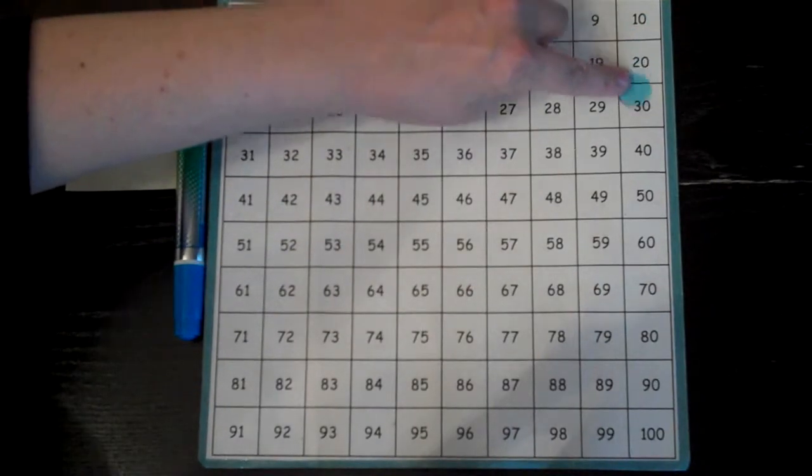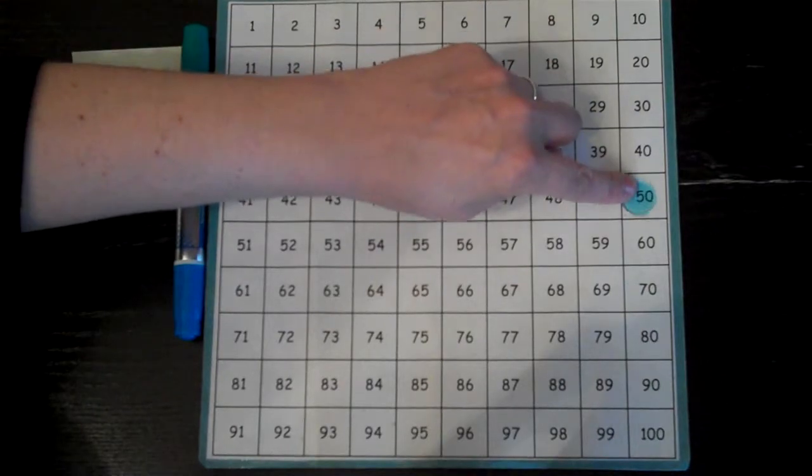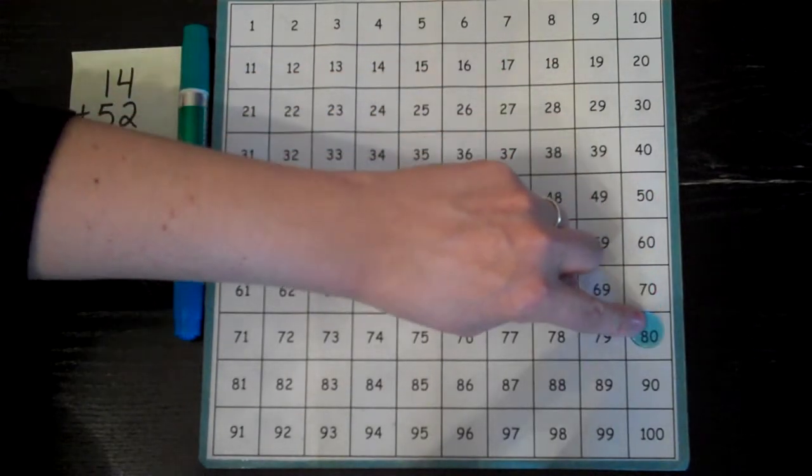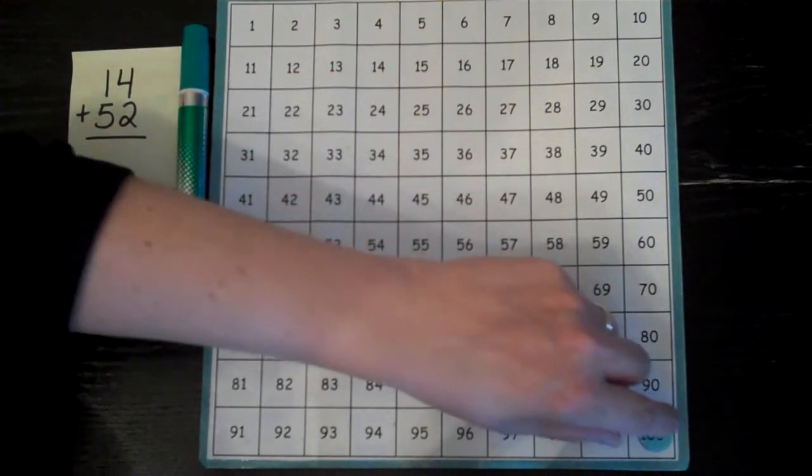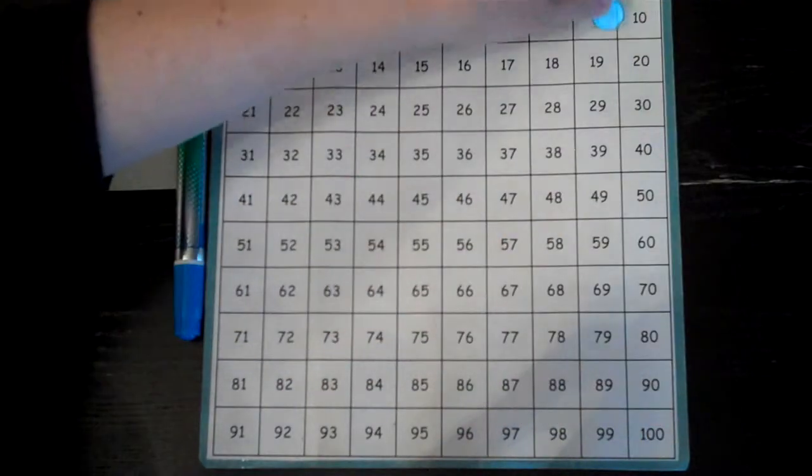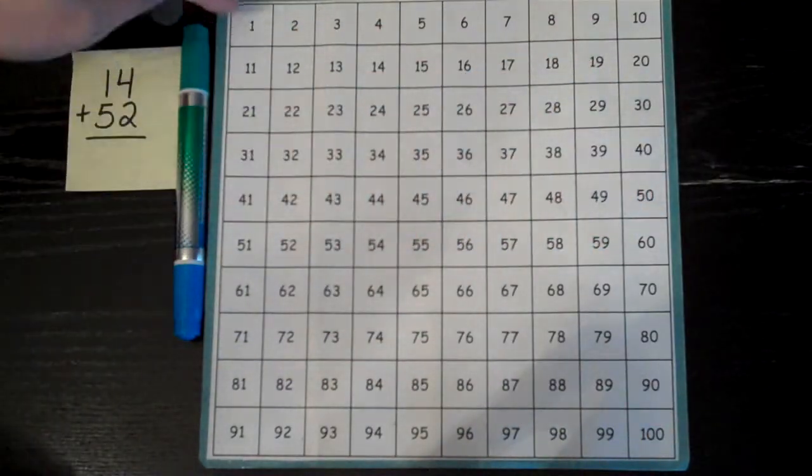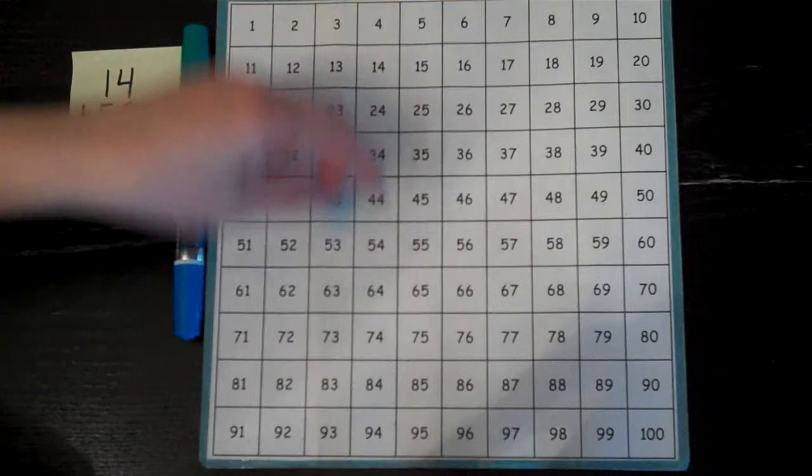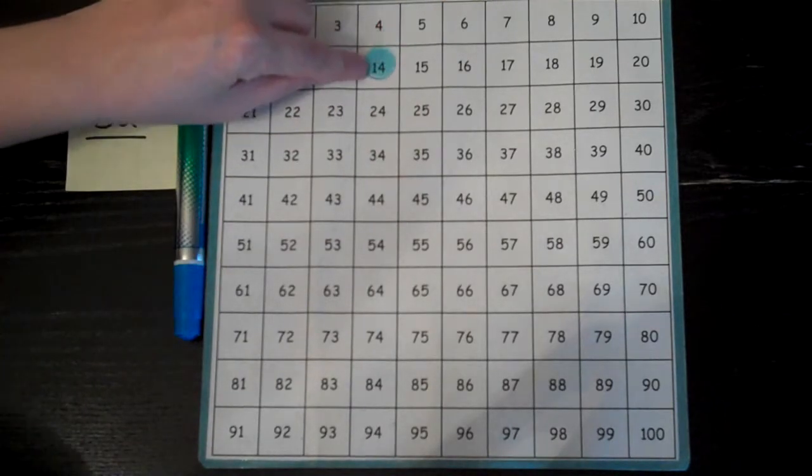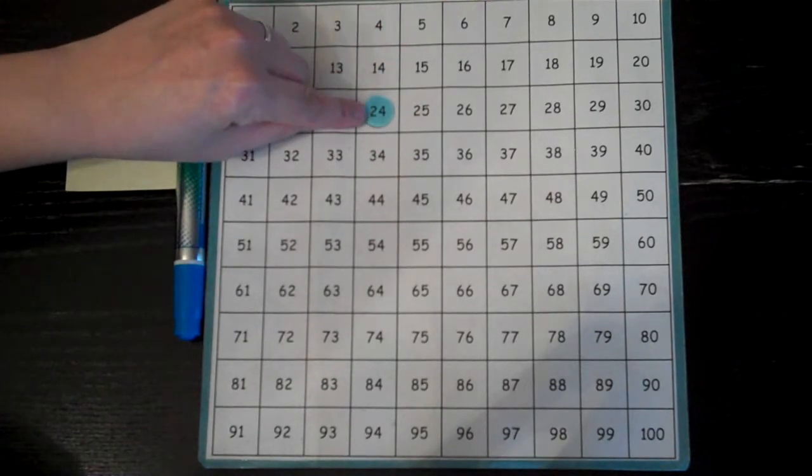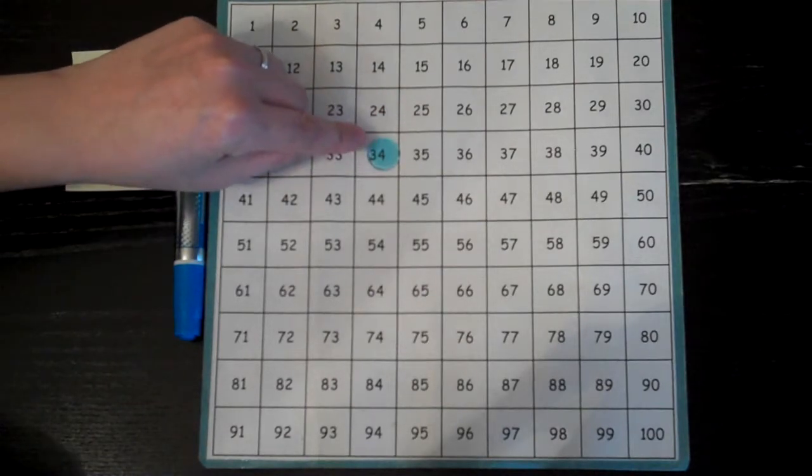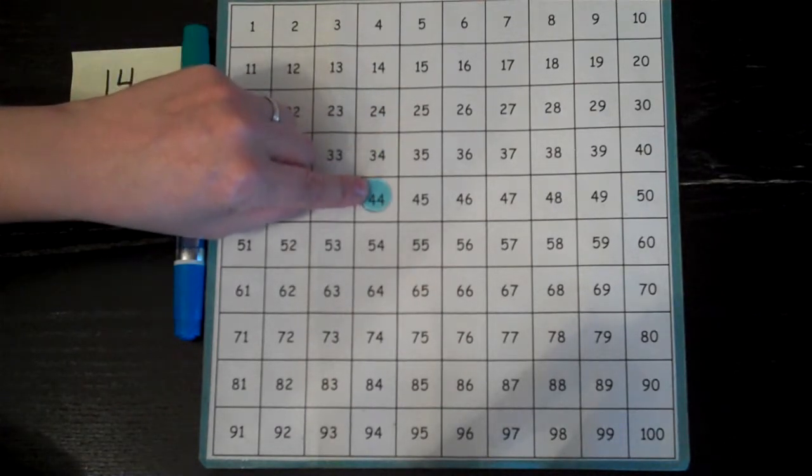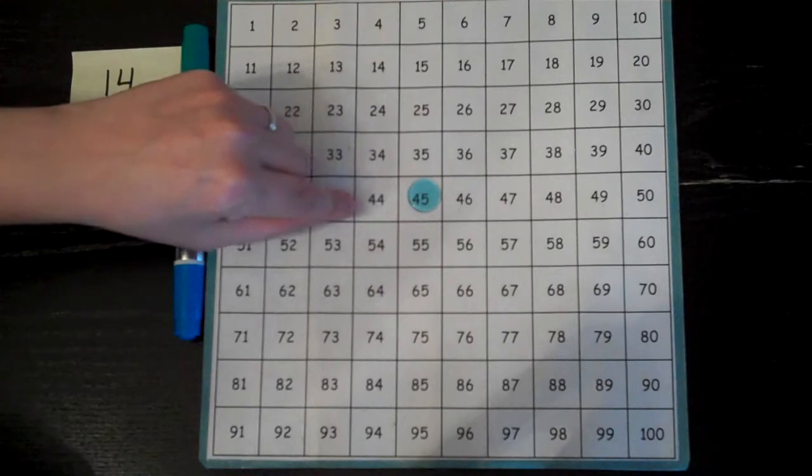10, 20, 30, 40, 50, 60, 70, 80, 90, 100. Each one is bigger by 10, and it works in every single column. 4 plus 10 is 14, plus 10 is 24. So I can count down by tens and to the right by ones.